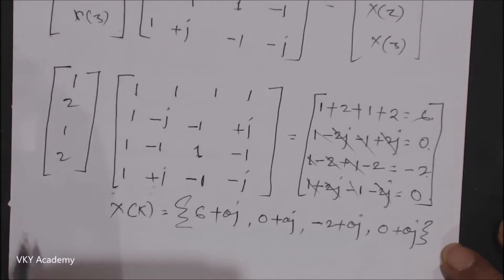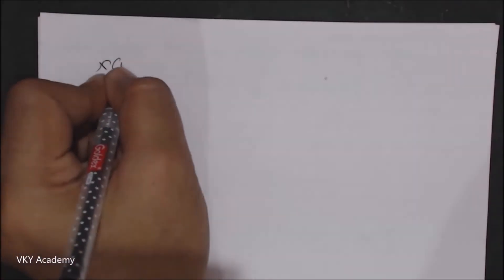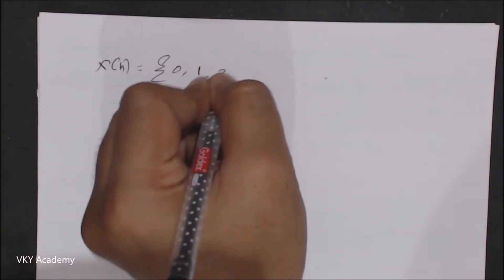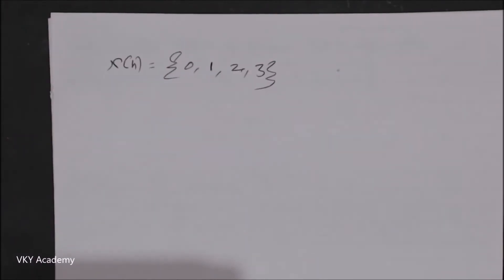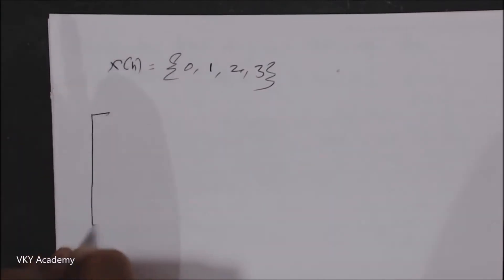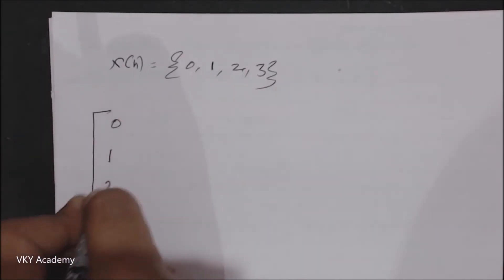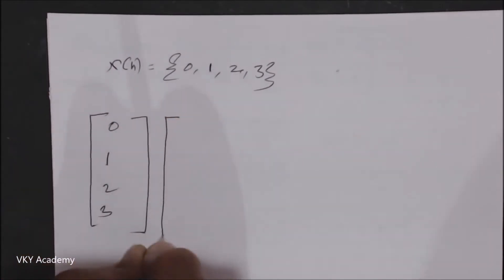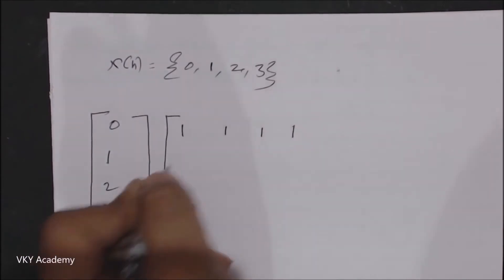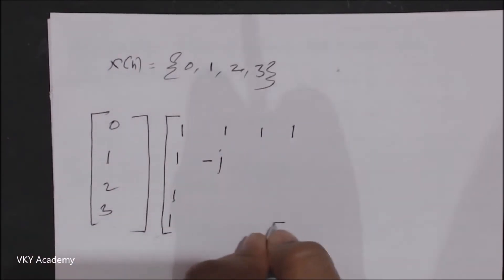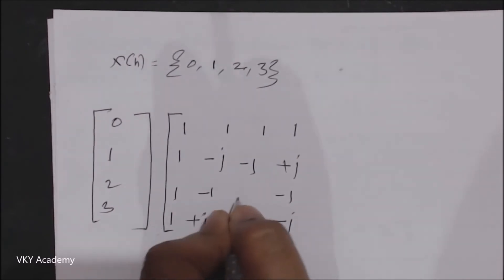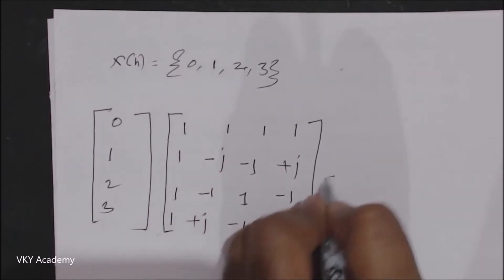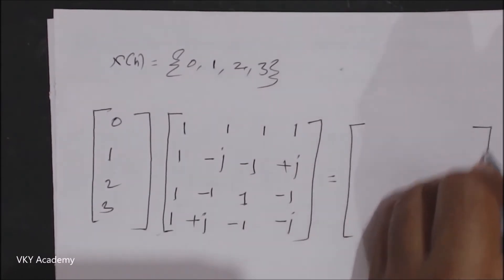In this way we can determine the DFT using the 4-point linear transformation matrix. Let us take one more example. X(n) = {0, 1, 2, 3}. Let us find the 4-point DFT using the linear transformation matrix. The input samples {0, 1, 2, 3} are multiplied with the W matrix: 1, 1, 1, 1; 1, -j, -1, +j; 1, -1, 1, -1; 1, +j, -1, -j.